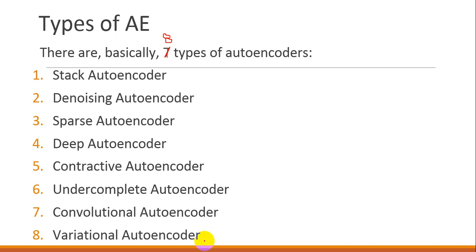In this session, I will try to discuss four types, and in the next session, I will discuss the remaining four types. The video will be long because we will try to understand the different types of autoencoders — not only the definition but also the structure. As you can see, there are eight types of autoencoders available.